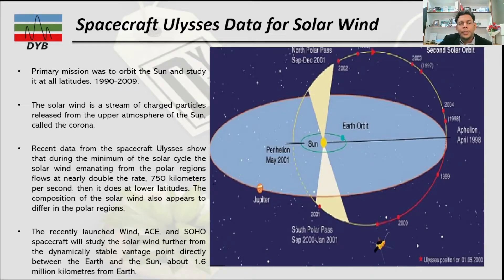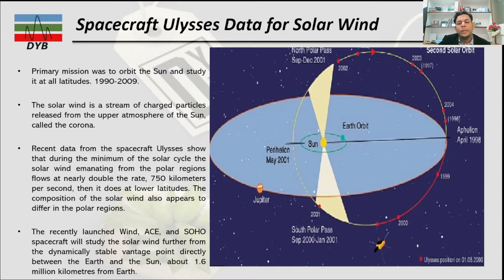From this data, the solar wind is a stream of charged particles released from the solar corona. Recent data from Ulysses shows that during the minimum of the solar cycle, the solar wind emitting from the polar regions flows at nearly double the rate — approximately 750 km per second — compared to the 450 km/s at lower latitudes.